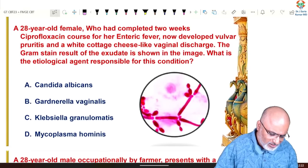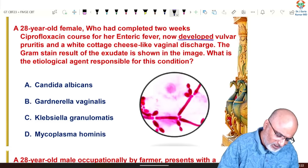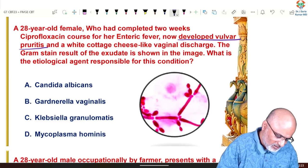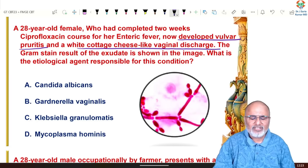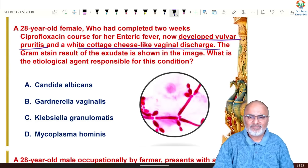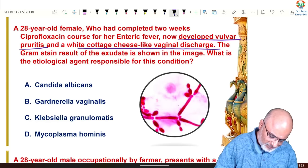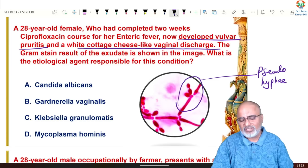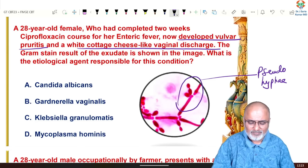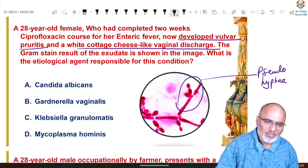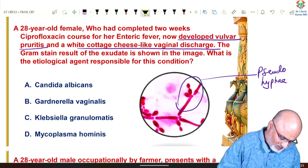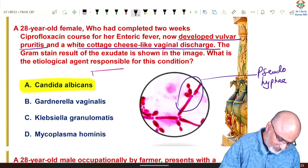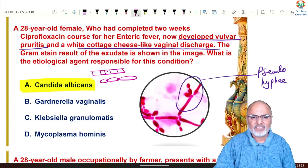A 28-year-old female who completed a two-week ciprofloxacin course for enteric fever now developed vulvar pruritus and white cottage cheese vaginal discharge. Wherever you see curdy white or cottage cheese-like vaginal discharge, think of fungal etiology. The Gram stain of the exudate shows beautiful pseudohyphae — suggestive of Candida albicans. Vaginal discharge has three etiologies: bacteria (clue cells), protozoa (jerky/wobbling motility — Trichomonas), and pseudohyphae — Candida albicans.